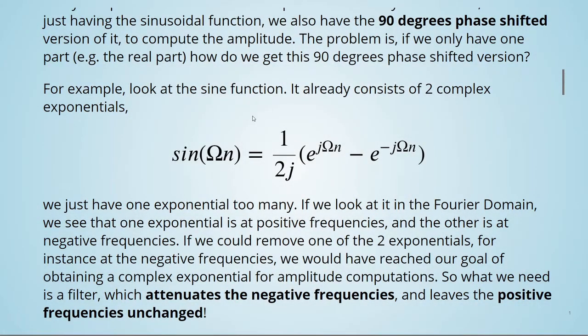For example, look at the sine function. It already consists of two complex exponentials. The sine function is equal to 1 divided by 2j times e to the power of j omega n minus e to the power of minus j omega n.